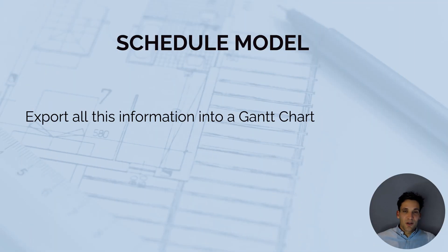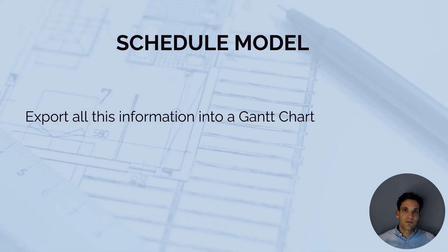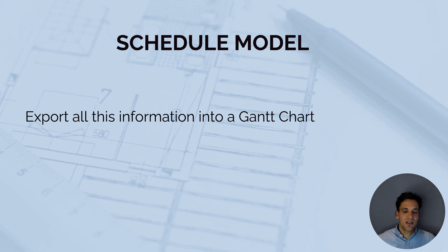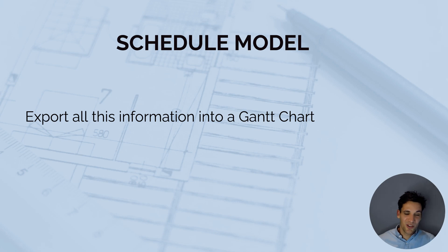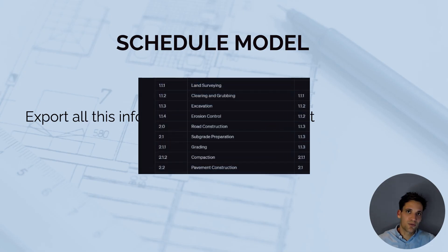Once we've collected data, created our list of tasks, put them in the correct order, and found any additional information we need, we can export all this information into a Gantt chart. The key point here is you want to make sure you give ChatGPT the correct prompt so you can simply copy and paste the information it provides directly into the schedule model.